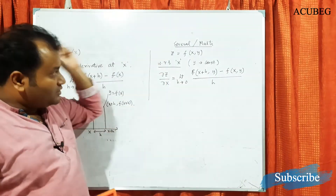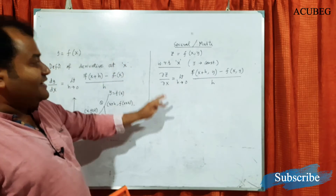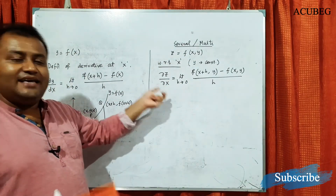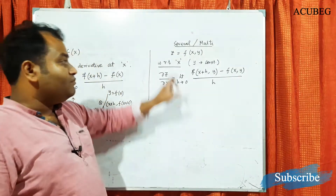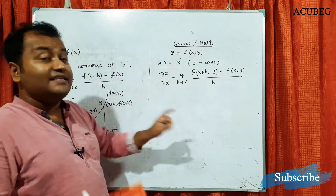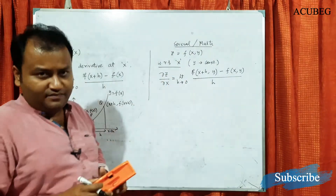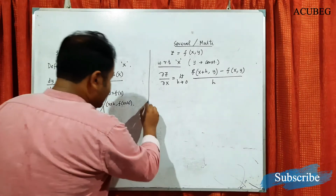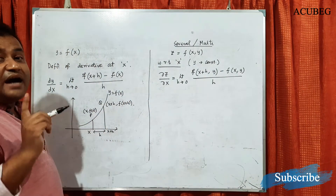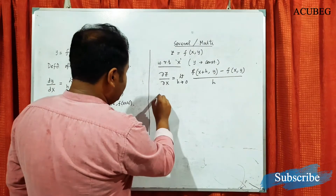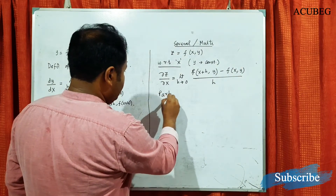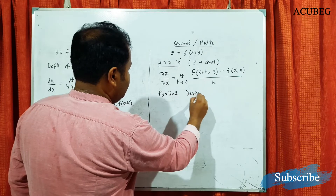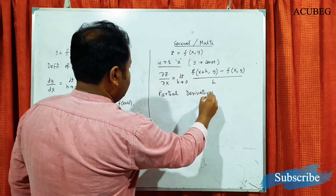The meaning is that we can take the derivative of this function with respect to x in exactly the same manner as before, but y has to be treated as a constant. These kinds of derivatives are called partial derivatives.